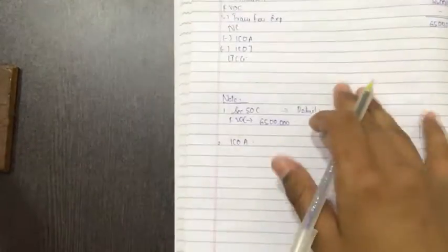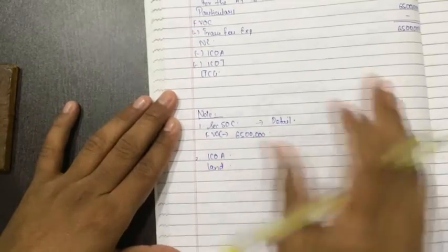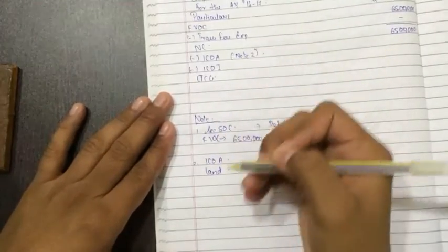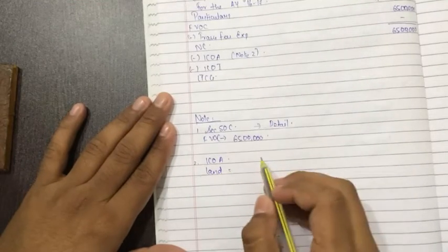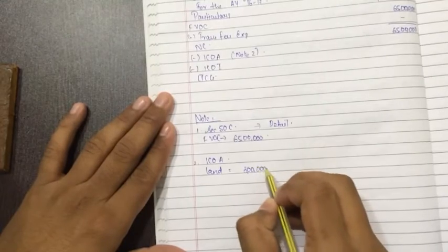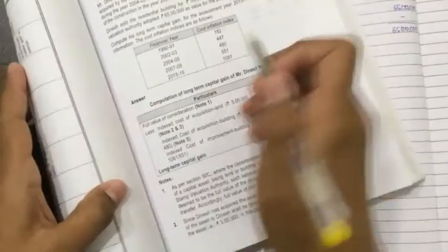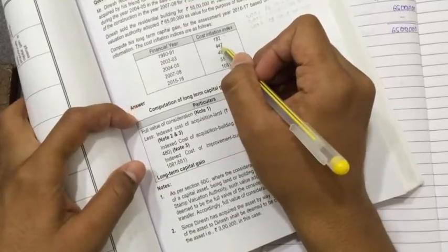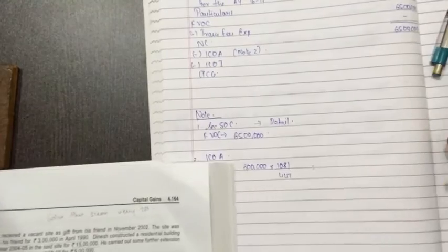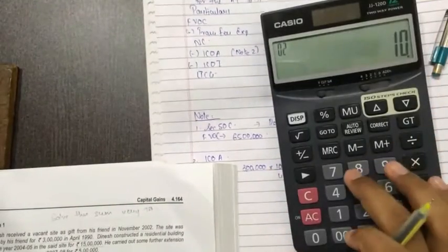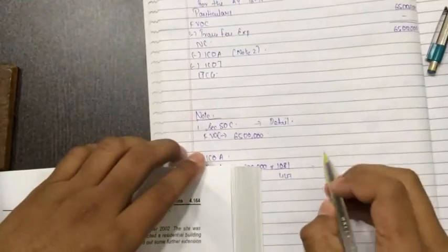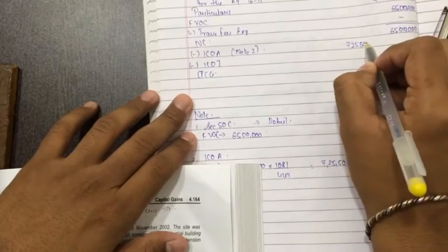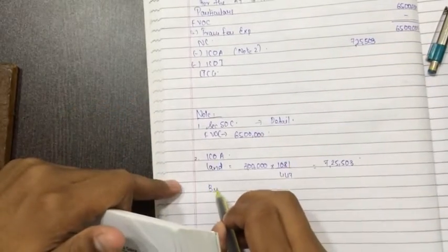Now index cost of acquisition. Index cost of acquisition, 3 lakhs for land and 15 lakhs for building. So we will calculate in the down section. Index cost of acquisition, here we will calculate index. Let me take the book aside. Index cost of acquisition for land, you have to calculate in total and write it over here directly. Put the value, substitute the value, write over here. Note 2, you give the link of where you have done. Note 2, index cost of acquisition land. How much land? Cost of acquisition is 3 lakhs into 1081. When it was transferred to Mr. Dinesh in 2002-03, cost of inflation is 447. The index cost of acquisition comes to 3 lakhs into 1081 divided by 447 is equal to 7,25,503. Substitute the value over here, 725,503.